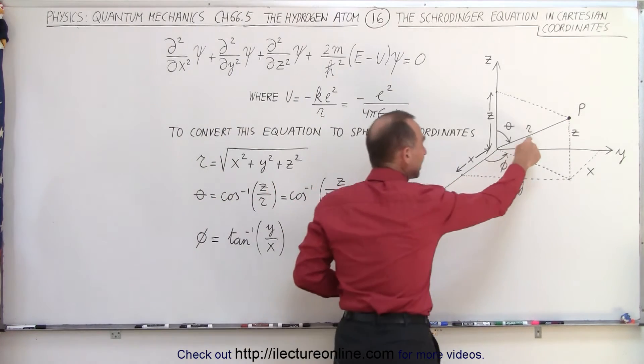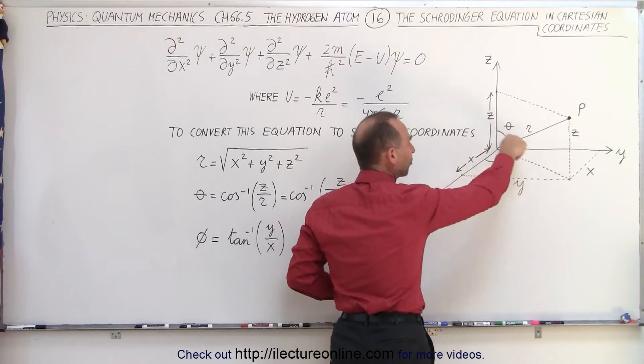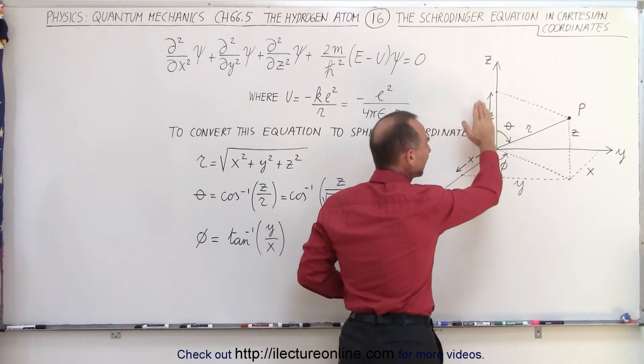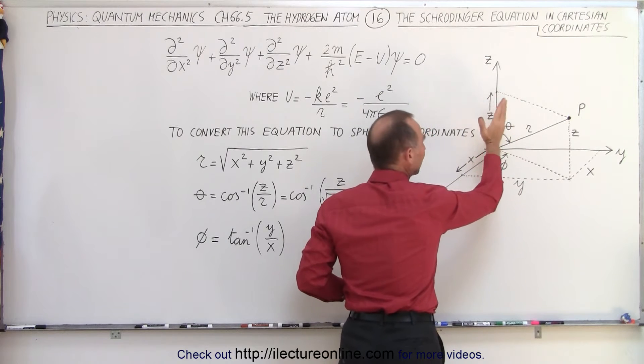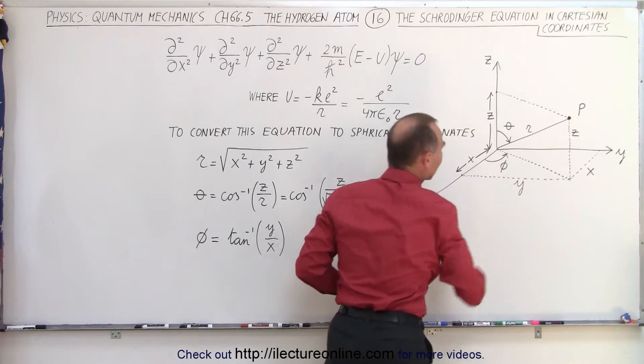Then r would be the distance from the origin to the electron. Then we have the azimuth angle, we call that phi, which goes in the x, y plane. And then we have the theta angle, which is the angle from the vertical z to the position of the electron.